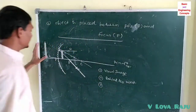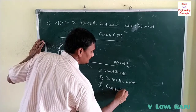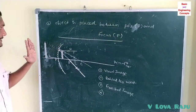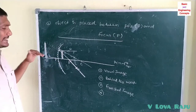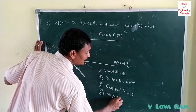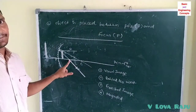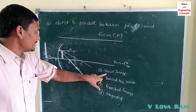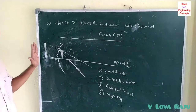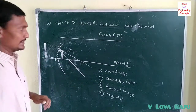For condition one, the image is erect and magnified — the size of the image is larger than the object. So the four characteristics when the object is placed between the pole and focus are: the image is virtual, formed behind the mirror, erect, and magnified.